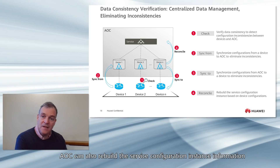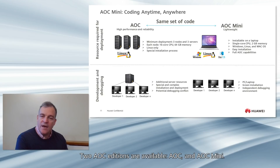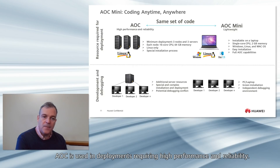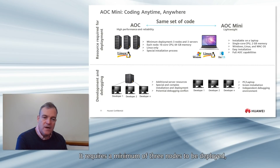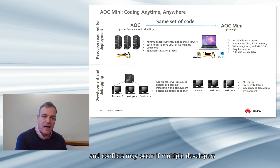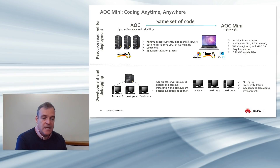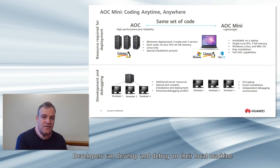AOC can also rebuild the service configuration instance information based on network device configurations. Two AOC editions are available: AOC and AOC Mini. AOC is used in deployments requiring high performance and reliability; it requires a minimum of three nodes and only Linux is supported. Additional server resources are required for development and debugging, and conflicts may occur if multiple developers debug at the same time. AOC Mini is used where limited resources are available. It is lightweight, can be installed on a local laptop, and supports Windows, Linux, and Mac with all of AOC's capabilities. Developers can develop and debug on their local machine and later deploy the same service in the high-performance production environment.